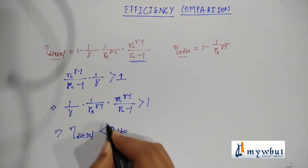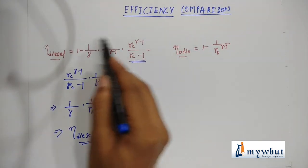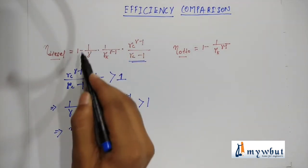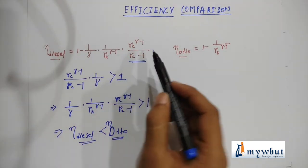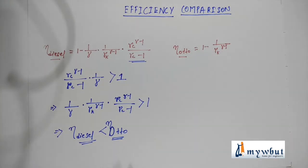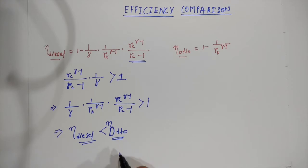Hence η_diesel becomes less than η_otto. Since this term is less than the other term, we find that the efficiency of the diesel cycle is less than the efficiency of the Otto cycle.